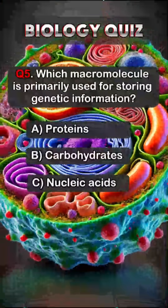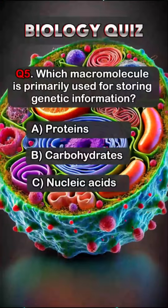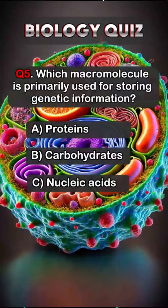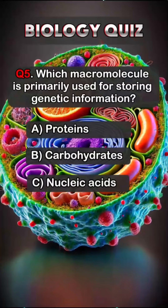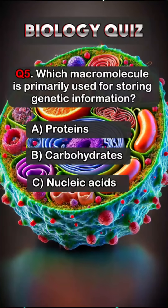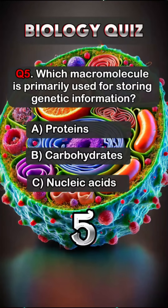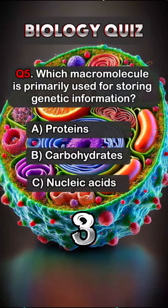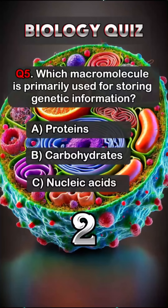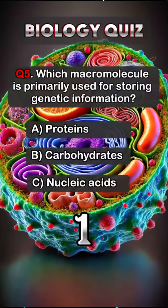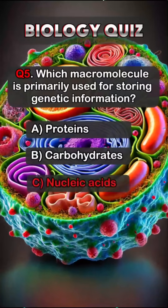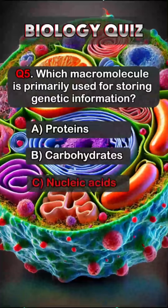Question 5. Which macromolecule is primarily used for storing genetic information? Answer C. Nucleic acids.